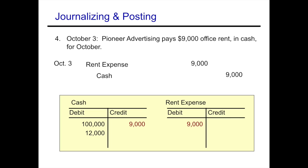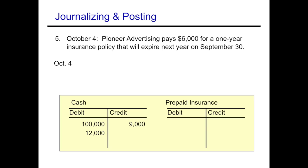On October 4th, Pioneer Advertising pays $6,000 for a one-year insurance policy expiring September 30th of next year. We're paying out cash, so cash is going down and gets credited. We're purchasing one year of insurance, which is a prepaid asset — prepaid insurance is an asset going up, so we debit prepaid insurance and credit cash for $6,000. We then post that to the ledger.